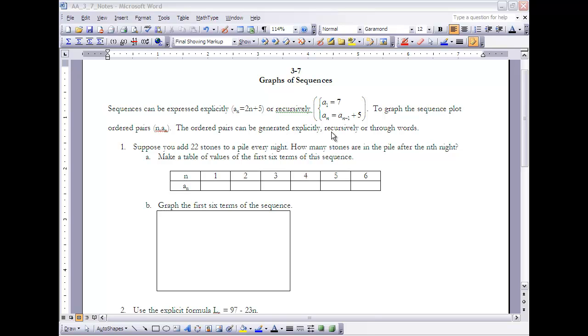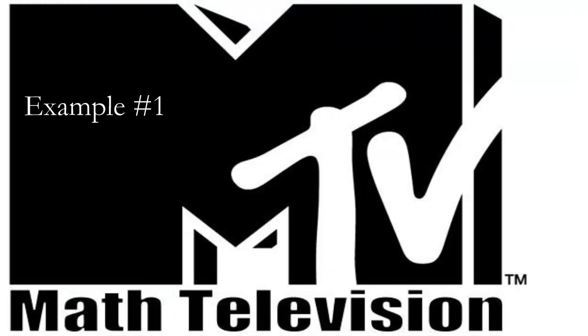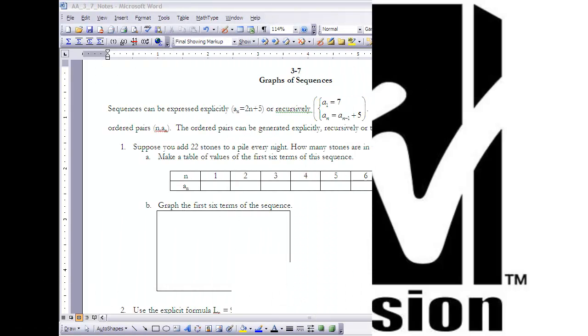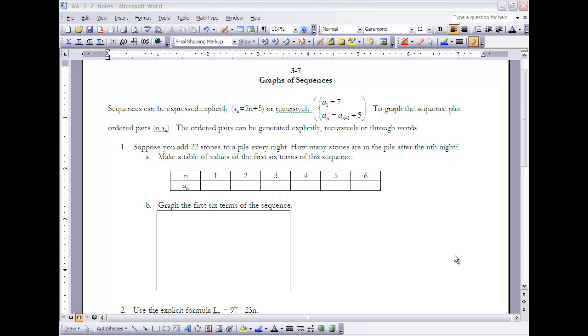The ordered pairs can be generated explicitly, recursively, or through words—any one of those works. Let's take a look at Example 1. It says: Suppose you add 22 stones to a pile every night. How many stones are in the pile after the nth night? The key condition here is after the nth night.